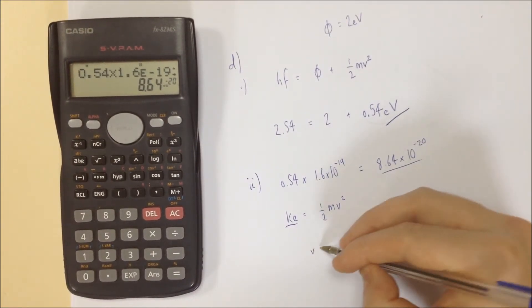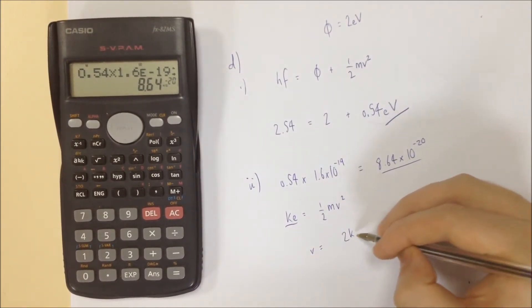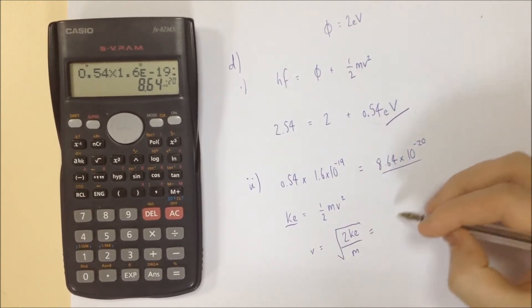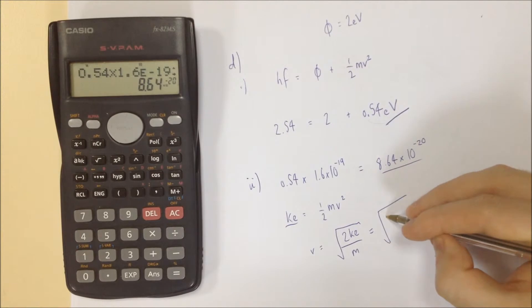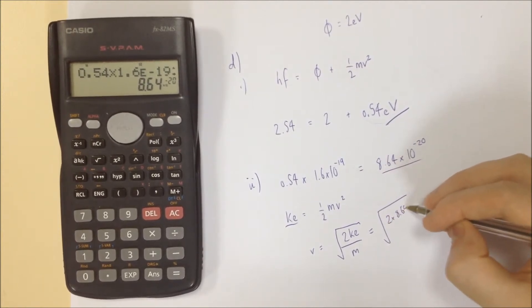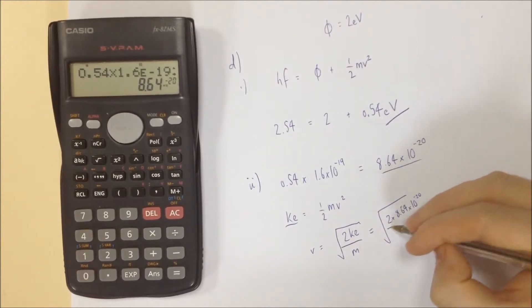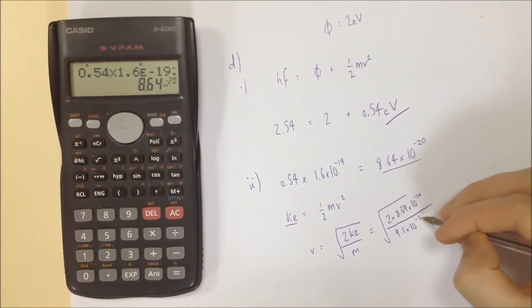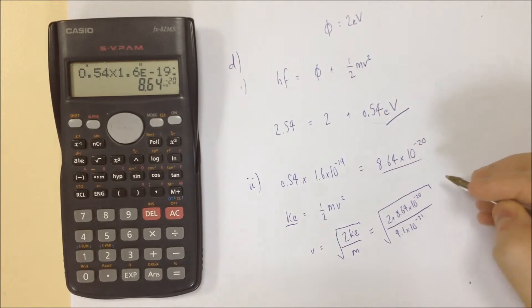And this value is equal to this value. We need to get v. So v equals 2ke over m square rooted. So we're going to have the square root of 2 by 8.64 times 10 to the minus 20. Divide by the mass of the electron, which is 9.1 times 10 to the minus 31 kilos. All of that is square rooted.